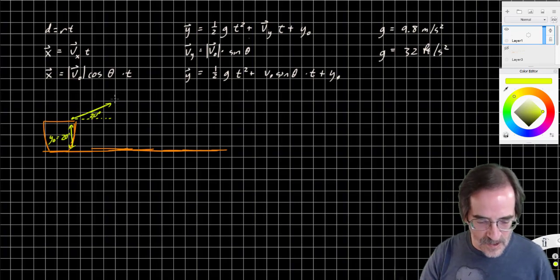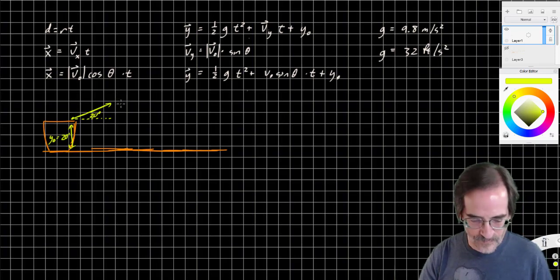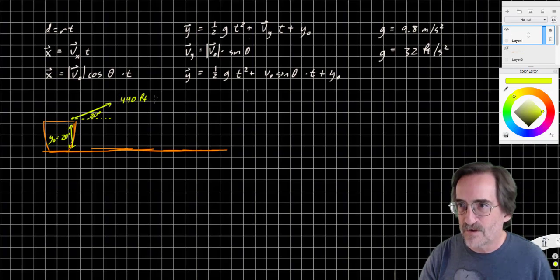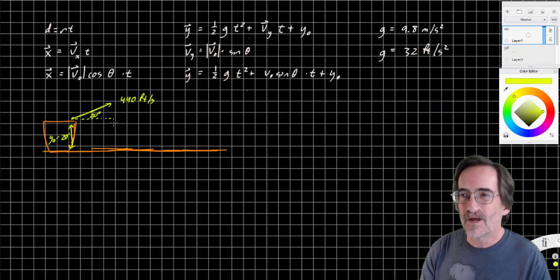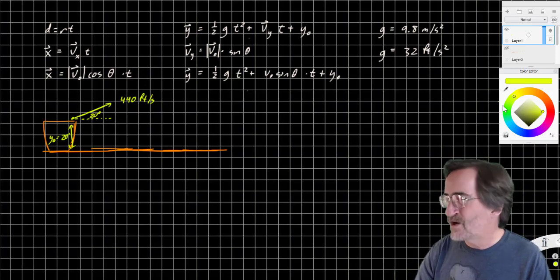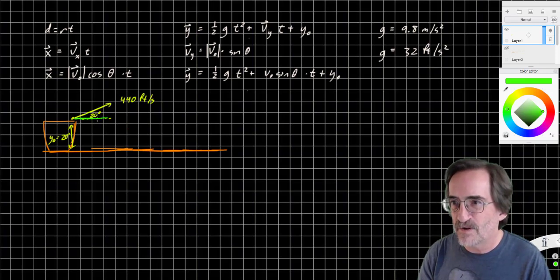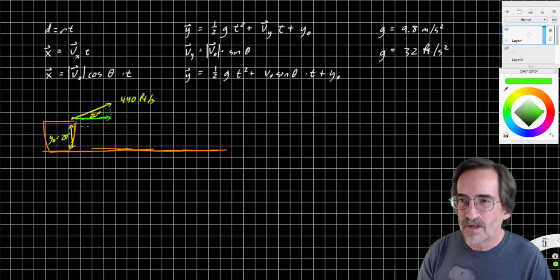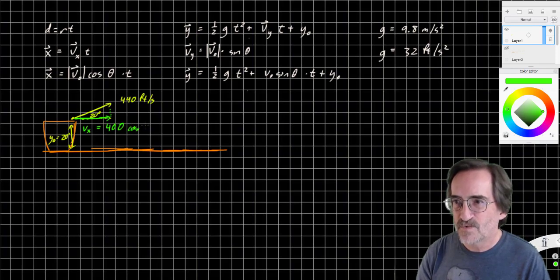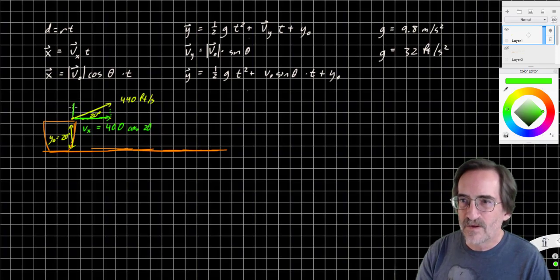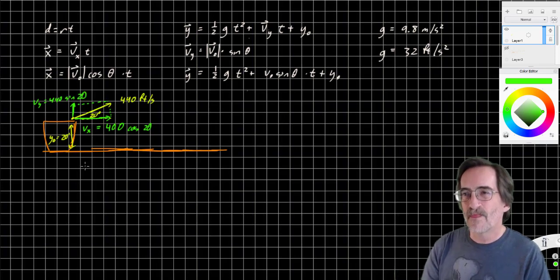And we're striking the ball at an angle of 20 degrees from the horizontal. And it has an initial velocity of 440 feet per second. That's about 300 miles per hour. Golf, by the way, has the second fastest ball of any sport. Jai alai actually has a faster ball. Let's break this down into its horizontal and vertical components. Its horizontal component, the velocity in the x direction, is going to be the initial velocity times the cosine of 20 degrees. And the velocity vertical, v sub y, is going to be 440 times the sine of 20 degrees.